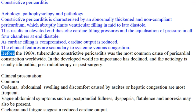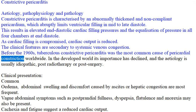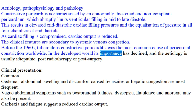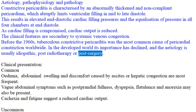Before the 1960s, tuberculous constrictive pericarditis was the most common cause of pericardial constriction worldwide. In the developed world its importance has declined, and the etiology is usually idiopathic, post-radiotherapy, or post-surgery.